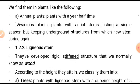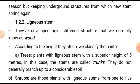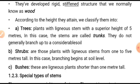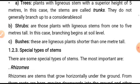Then there is the ligneous stem. Ligneous stems have a developed rigid stiffened structure that we normally know as wood. According to the height they attain, we classify them into two: trees — plants with a ligneous stem of a height of five meters or more, where the stems are called trunks and do not generally branch up to a considerable height — and shrubs.